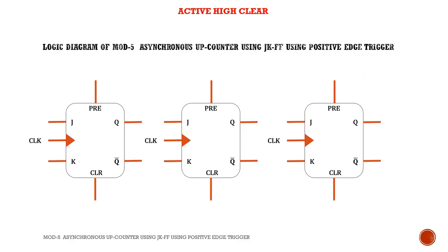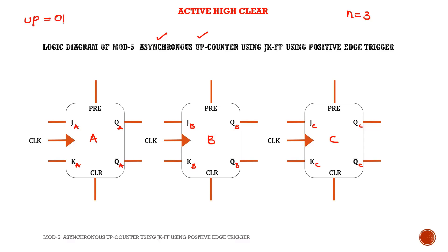Now let us draw the logic diagram of mod 5 asynchronous up counter using JK flip-flop with positive edge trigger. Since n=3, we use 3 flip-flops: flip-flop A (JA, KA, QA, QA-bar), flip-flop B (JB, KB, QB, QB-bar), and flip-flop C (JC, KC, QC, QC-bar). Since this is asynchronous, the clock is given only to the first flip-flop; the output of each flip-flop acts as the clock for the next. For an up counter, we connect the opposite sign.